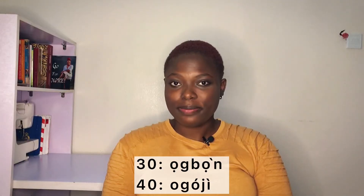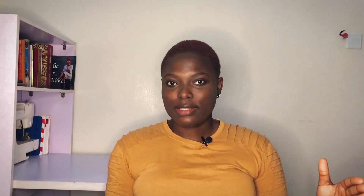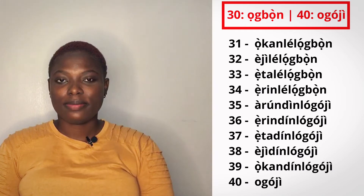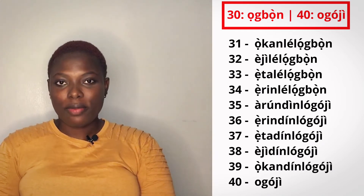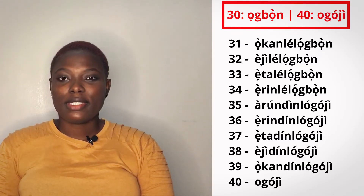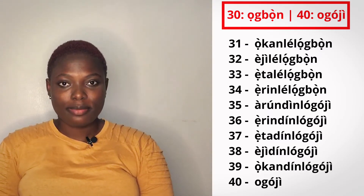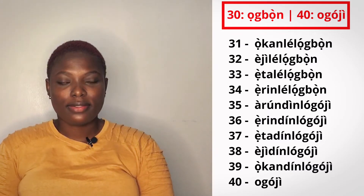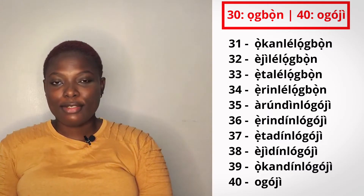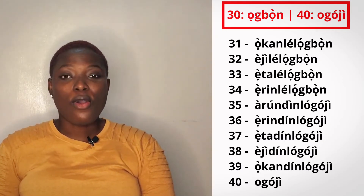Now let's count to 40. 40 is ogoji. We will count from 30 to 40: okon li ogbon, eji li ogbon, eta li ogbon, erin li ogbon — those are 31 to 34. Then for 35 to 39 we subtract from 40: erin dilogoji, eta dilogoji, eji dilogoji, okon dilogoji.